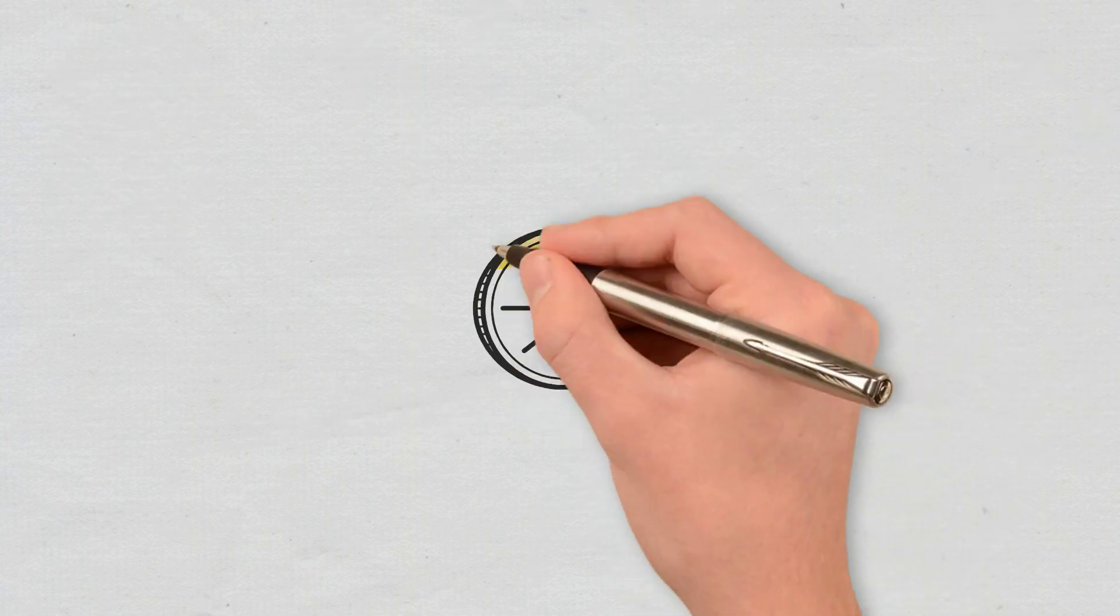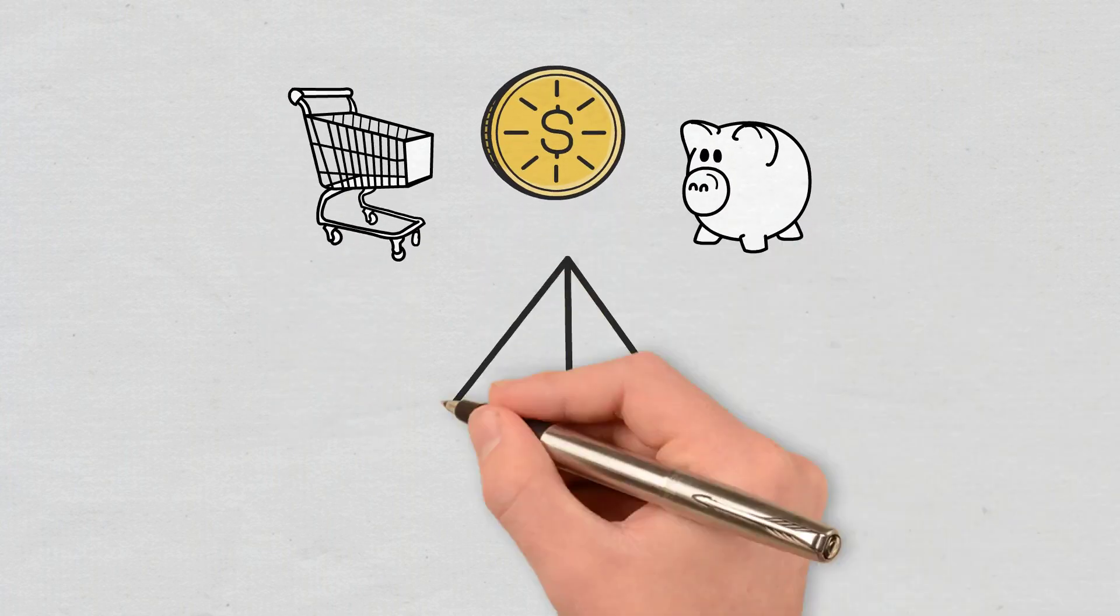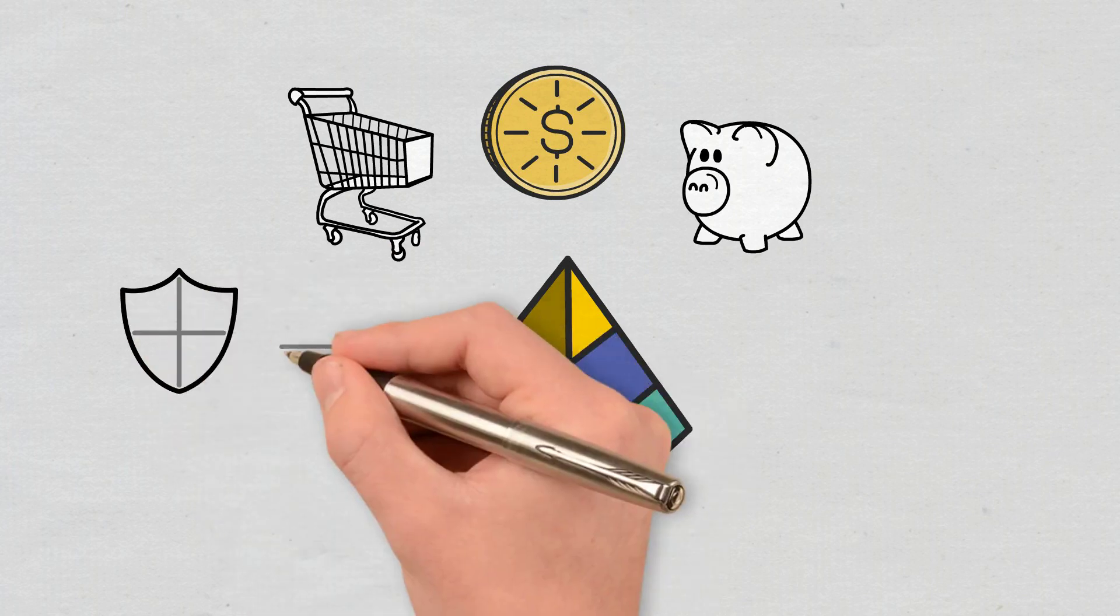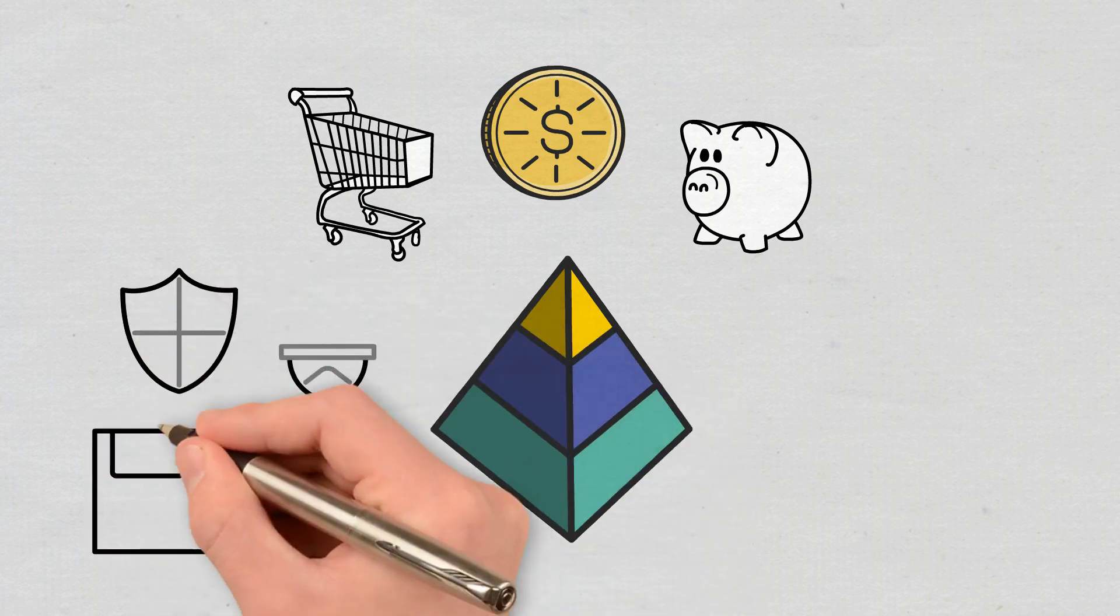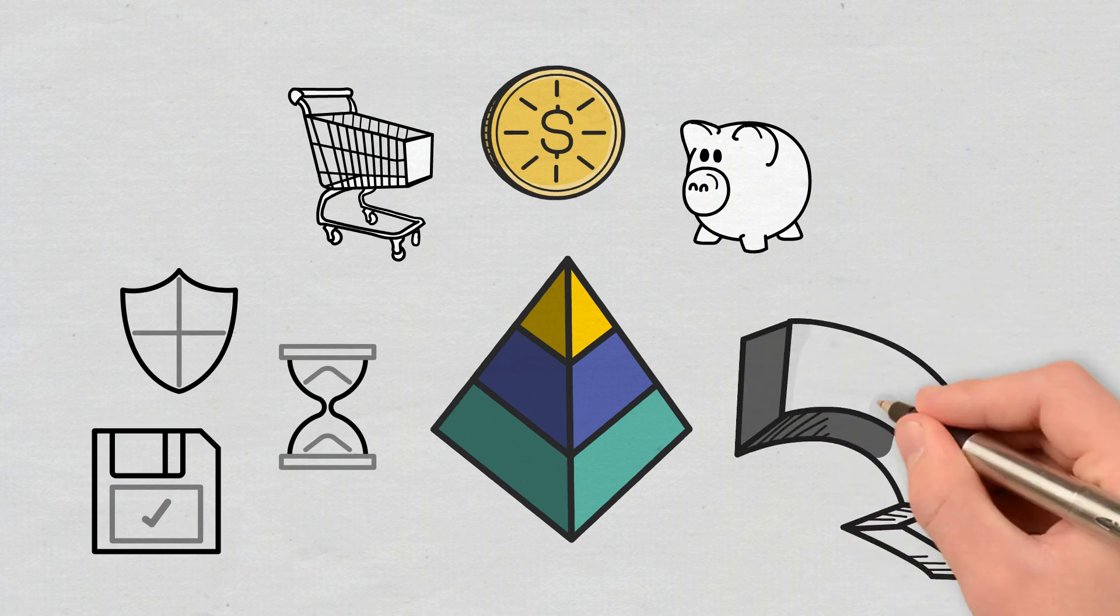Considering the increasing usage of cryptocurrency in everyday life, the need for blockchain layers has also grown. Such layers are necessary for ensuring higher network security and speed, better record keeping, higher TPS, and so on. Here is where layer 1 and layer 2 solutions come into play.